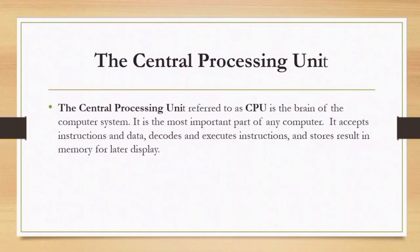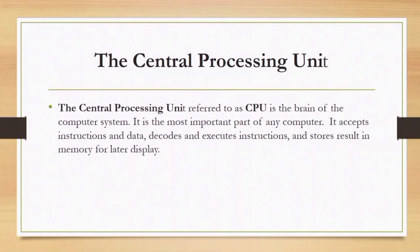The next component is the central processing unit. The CPU is the brain of the computer system — it is the most important part of any computer. It accepts instructions and data, decodes and executes instructions, and stores results in memory for display. When you hear the word 'decodes,' it means converting from human-readable format to machine-readable format.